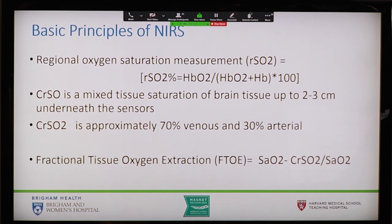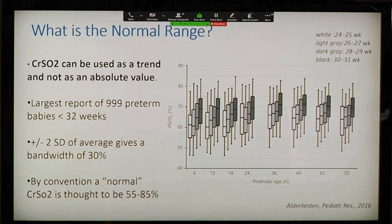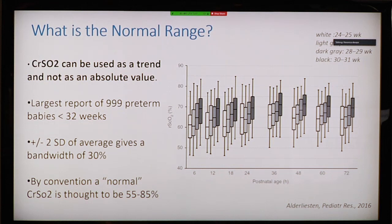Another number used in many studies is tissue oxygen extraction. This is estimated by subtracting the regional oxygen saturation from the systemic oxygen saturation, then dividing by the systemic saturation — essentially estimating how much oxygen was extracted in the tissue, specifically the brain. My talk today focuses on cerebral oxygen saturation, as there's also work on systemic regional saturation like renal or mesenteric, but my focus will be on brain saturation.